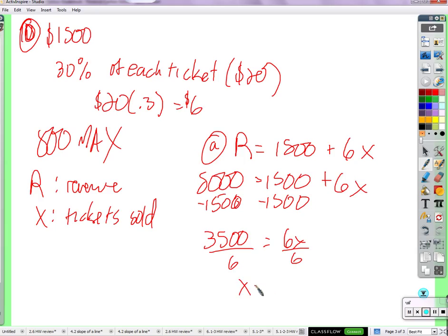About 583.3. It's about 583.3. 583 is not enough. It's impossible to sell 583 and one-third of a ticket. So we have to sell 584. That's how many we actually have to sell.